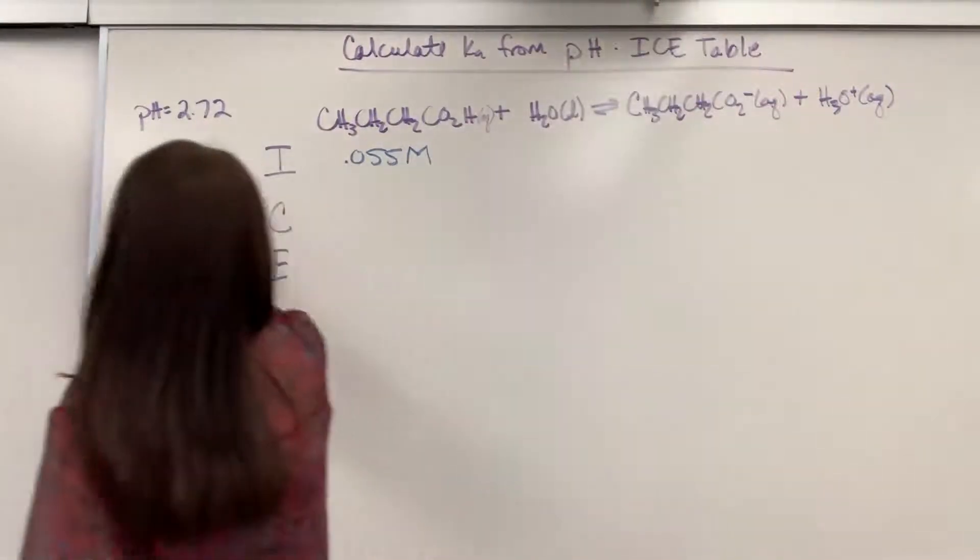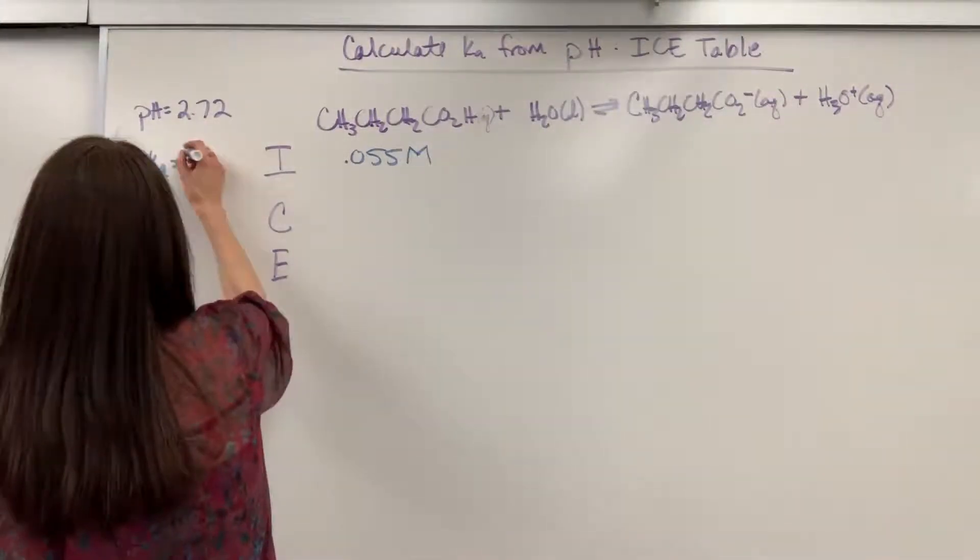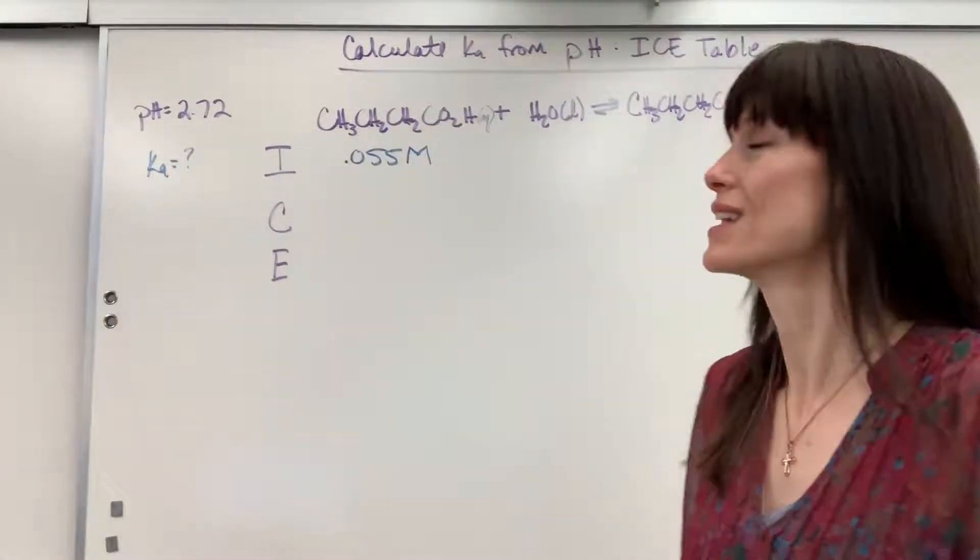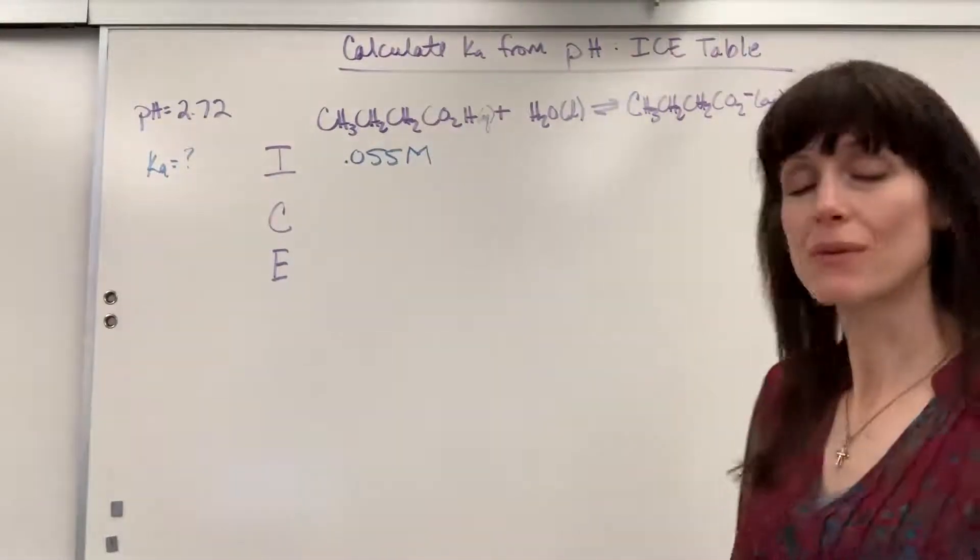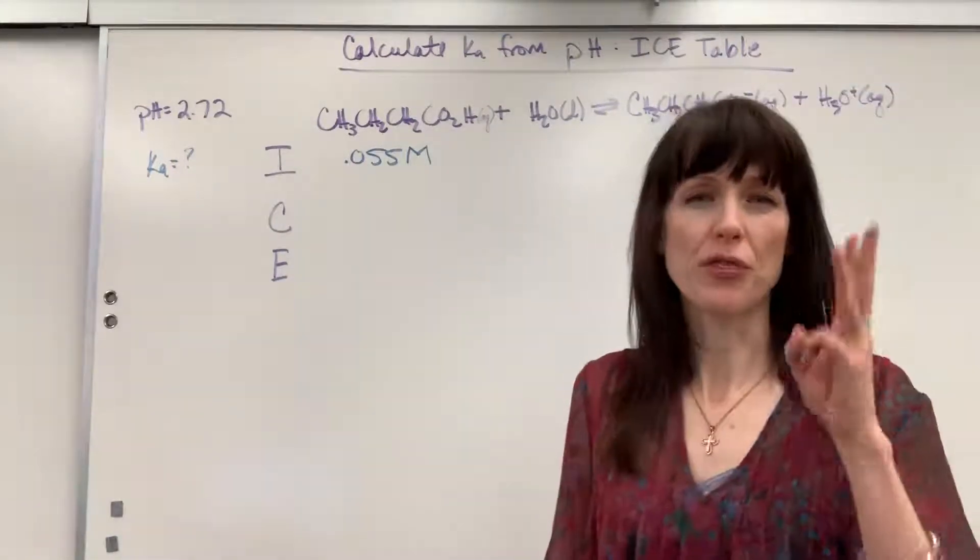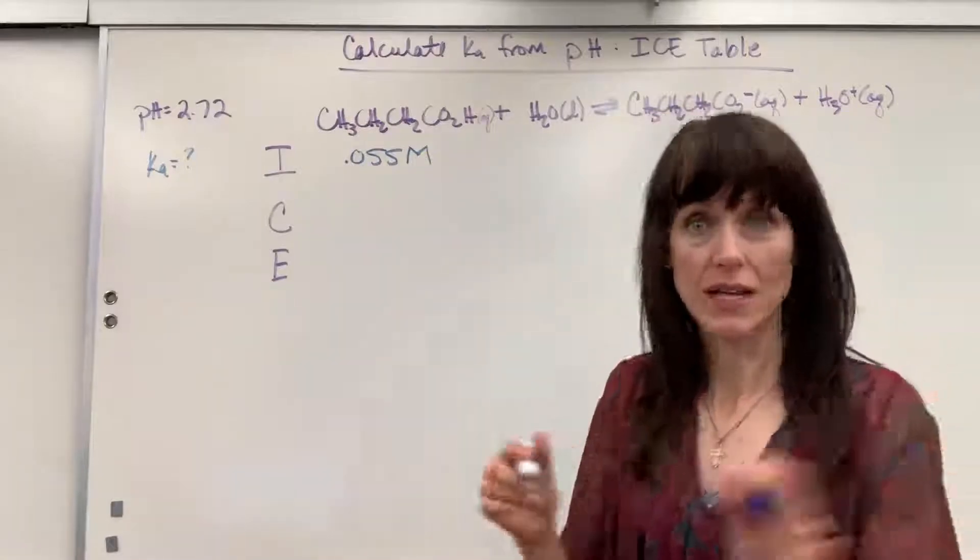Well, they want to know Ka. They're saying what is this ionization constant, the equilibrium constant for the acid reaction. So what we're going to do is an ice table. Now, in doing ice tables, you'll recall that there are three things that we need. I'll write this down.